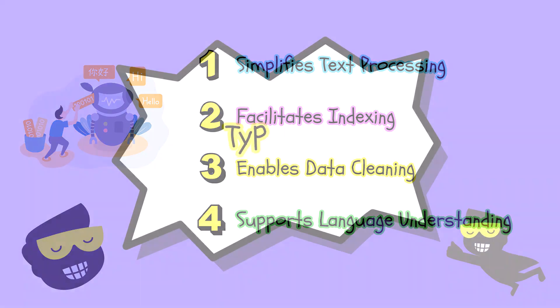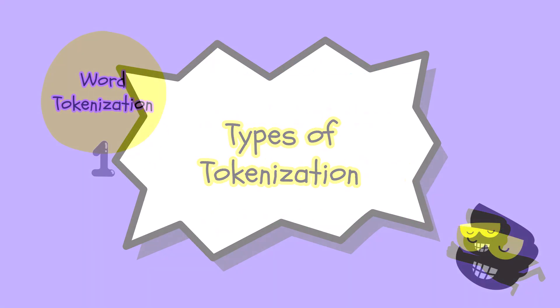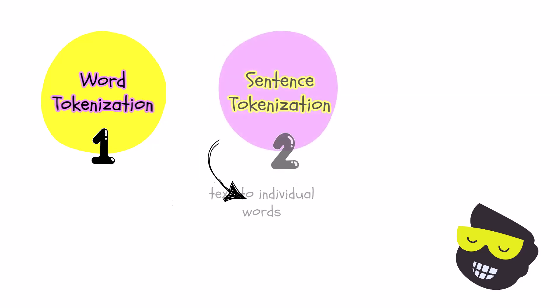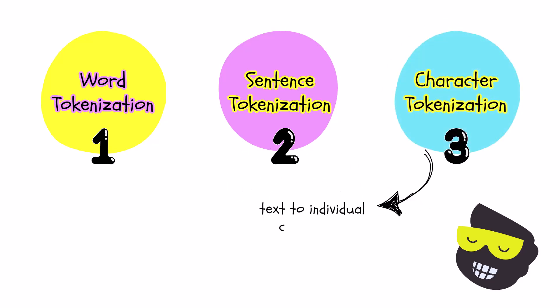There are three main ways to tokenize text, each serving a different purpose. First is word tokenization, which splits text into individual words — this is the most common form. Then we have sentence tokenization, which splits text into sentences, useful for tasks that require sentence-level analysis. Finally, character tokenization splits text into individual characters; this is less common but useful for certain NLP tasks like character-level language modeling.